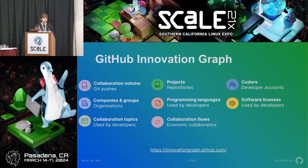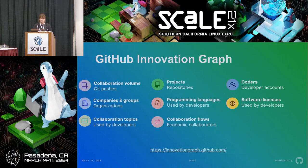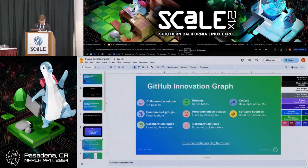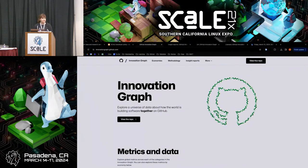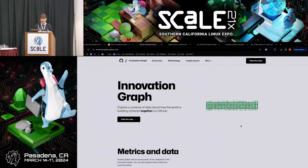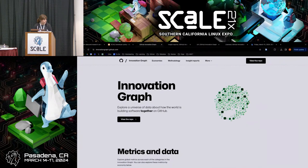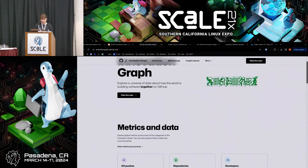I will get into the Innovation Graph — we're going to go on the website because the screen sharing worked out. Basically we had a lot of information about how people are interacting and working publicly on GitHub. This is all public, not enterprise. Things like git pushes, repositories, what economies are collaborating with each other, licenses — that one's a really cool one — and different topics used by developers. So we built out this Innovation Graph website.